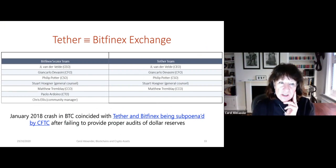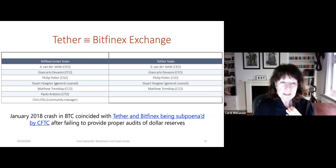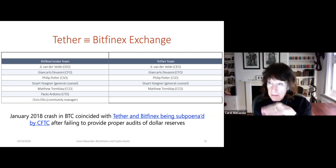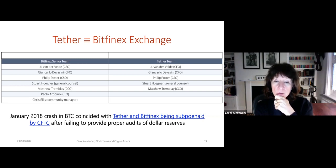The Bitfinex exchange senior team — the CEO, CFO, chief security officer, chief technology officer, chief compliance officer, and general counsel — is basically the same as the board of Tether. You can see the names basically coincide. In 2018 there was a big crash in Bitcoin in January because the price had risen at the end of 2017 to $20,000 and it crashed down to about $10,000. It coincided with Tether and Bitfinex being subpoenaed by the CFTC.